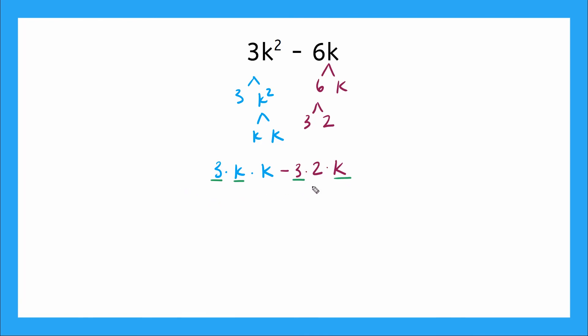So two matching factors in both of my terms mean I can pull out 3k and I will have my parentheses for what's left in each term. What do I have left in my first term if I pulled out the 3 and the k? Just a k. And then in my second term, what do I have left if I pulled out the 3 and the k? Just a 2. So my factored form would be 3k(k - 2).